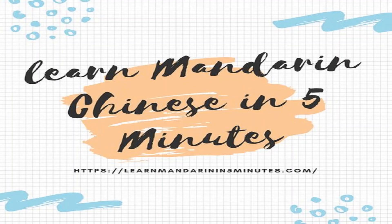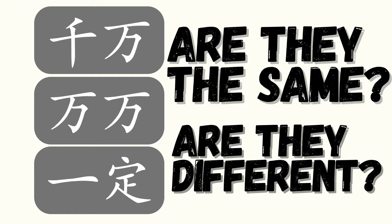Hello everyone! 大家好! Welcome to Learn Mandarin Chinese in 5 Minutes YouTube Channel. In this episode, we will be comparing adverbs 千万 with 万万 and 一定. Before we get started, do remember to subscribe to our YouTube channel, and if you are on YouTube, click the alert notification.